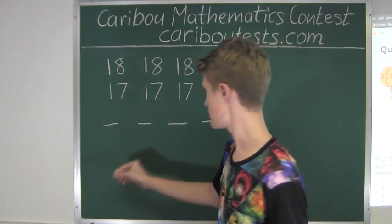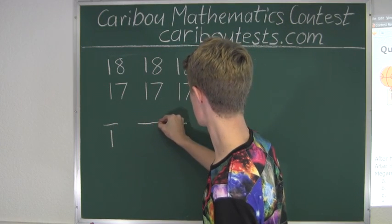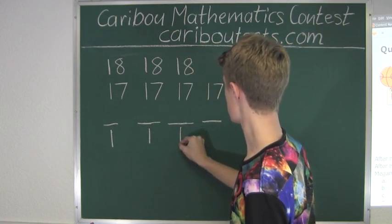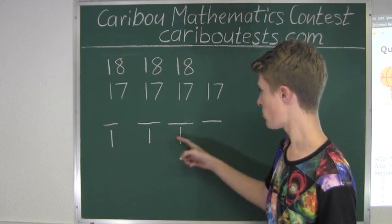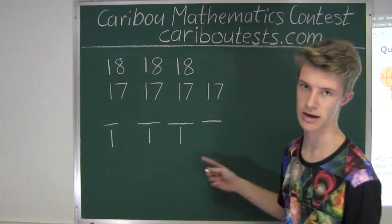So here we have 18 minus 17 is 1, 18 minus 17 is 1, and 18 minus 17 is 1. So since she got three points more than her final average, she would have had to get three points less.